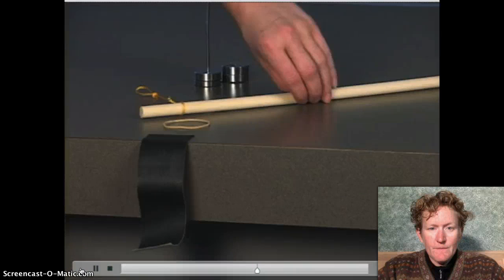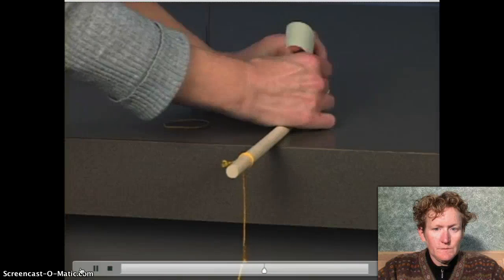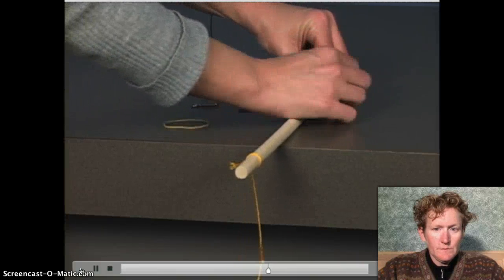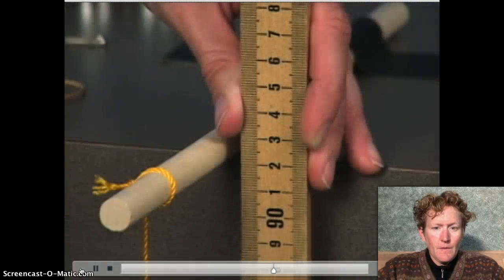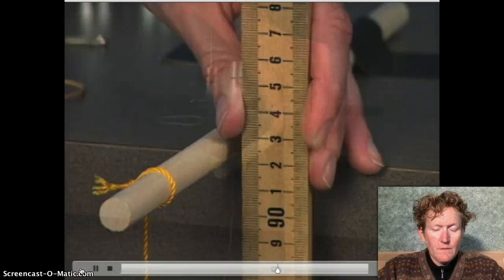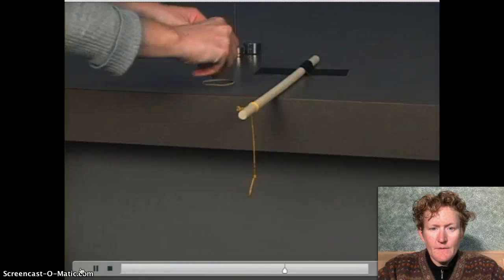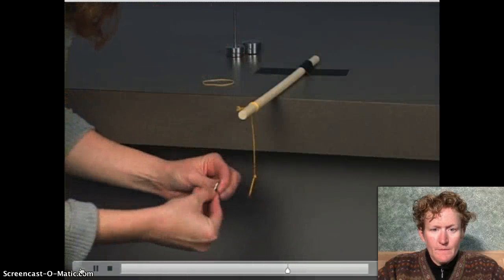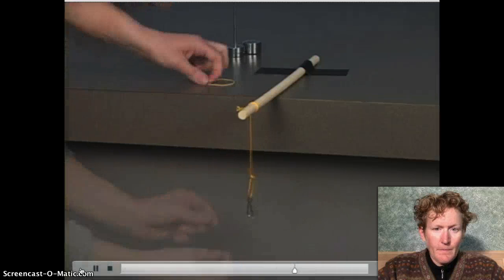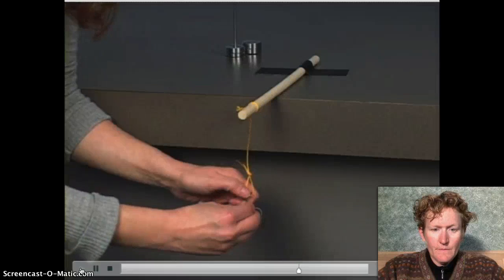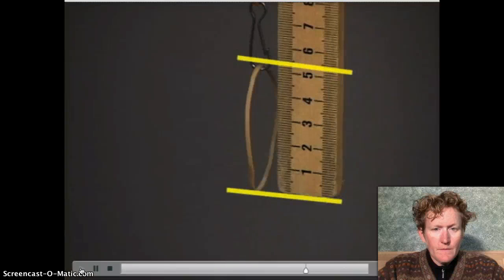Now it's time to set up. We can secure a dowel rod with a length of string attached to the edge of a countertop using tape. The dowel rod is secure and stable. There are more than 50 centimeters between the dowel rod and the floor. This space is needed for stretching the rubber band. We then tied a ring hook to the free end of the string. We measure the length of the hanging rubber band and record this value as the original length in the data table.